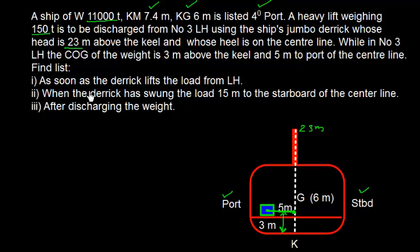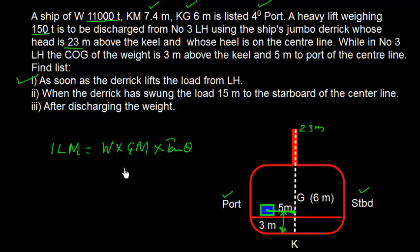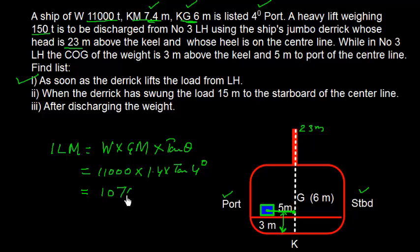Find the list as soon as the derrick lifts the load. There are various stages, so let's focus on stage 1. First, the ship is already listed, so we need to find the Initial List Moment (ILM), given by the formula W × GM × tan(theta). W is 11,000, GM is 7.4 minus 6 = 1.4, and tan(4°) gives ILM = 1076.9 ton meter towards port.